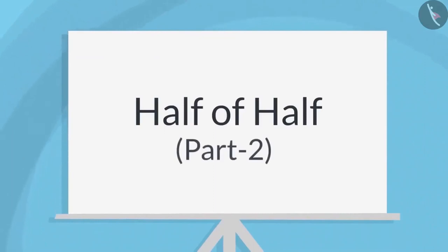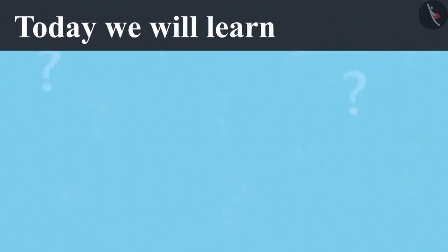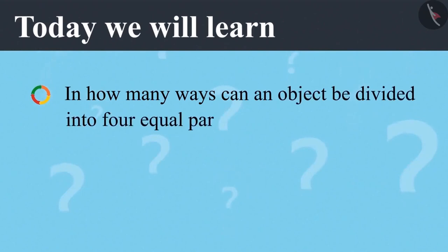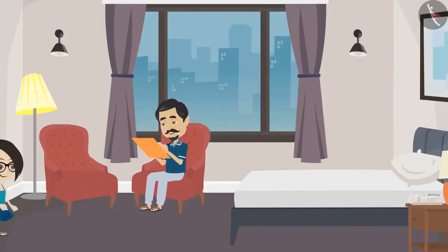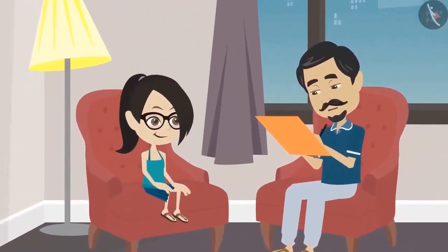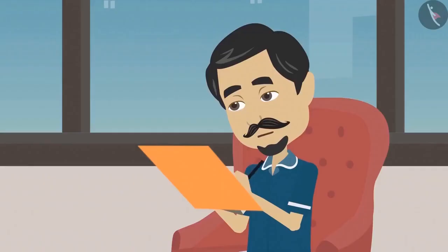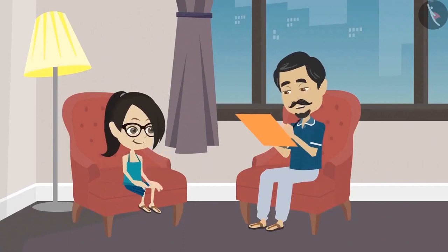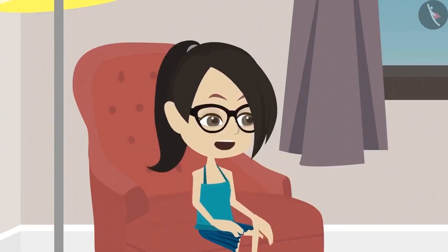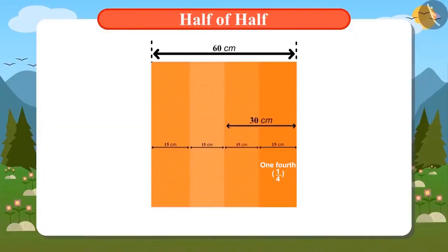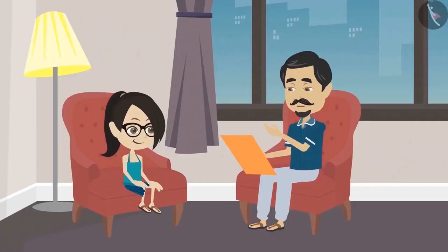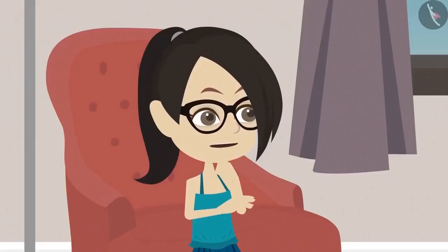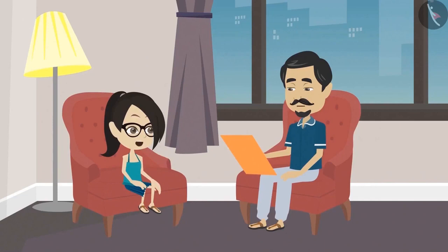Half of Half, Part 2. Today we will learn in how many ways an object can be divided into four equal parts. What are you doing, Daddy? Yesterday, we divided our field into four parts. Now I am trying to divide it in other different ways. Does that mean you are going to plant more than four crops? No, I will plant only four crops. We already distributed our field yesterday for four crops. Then why are you dividing it again today? Look, the field can be divided into four equal parts in many other ways too. I will try the way which is best suited for planting.